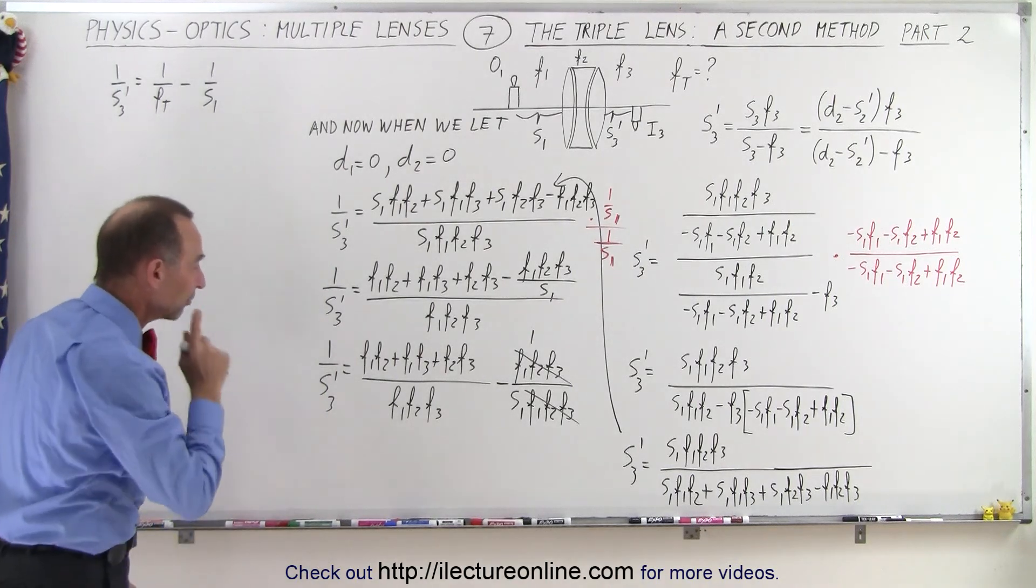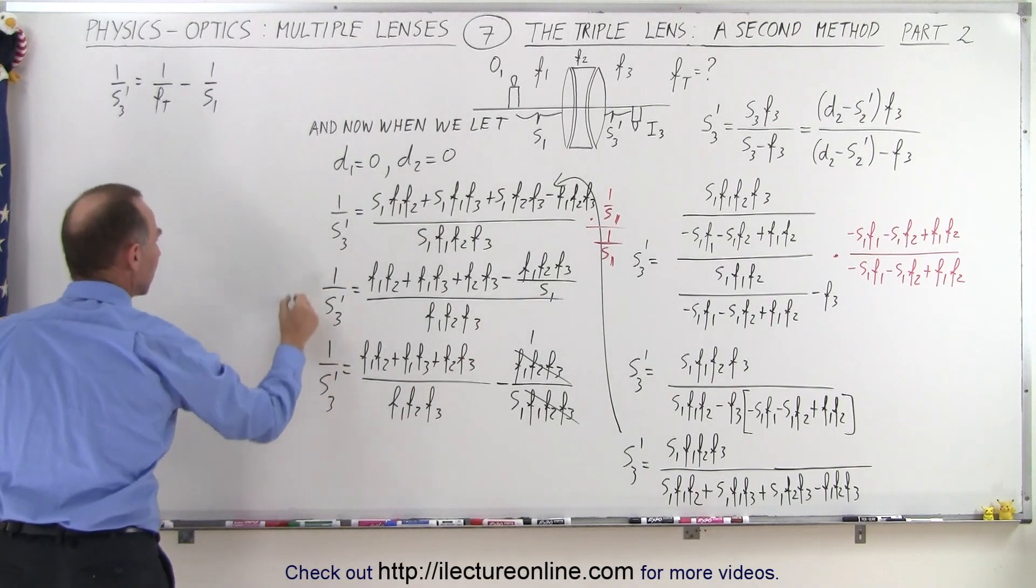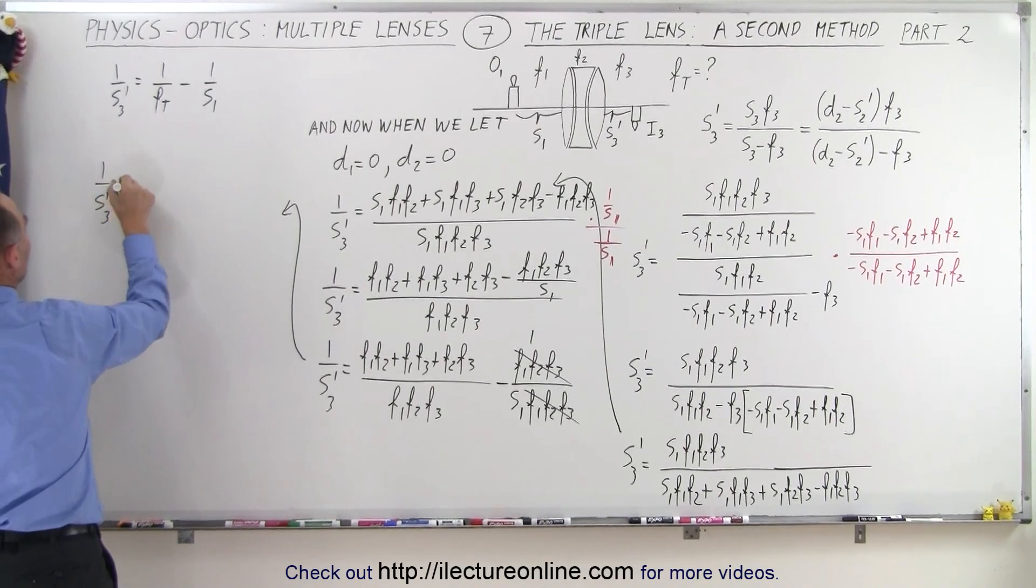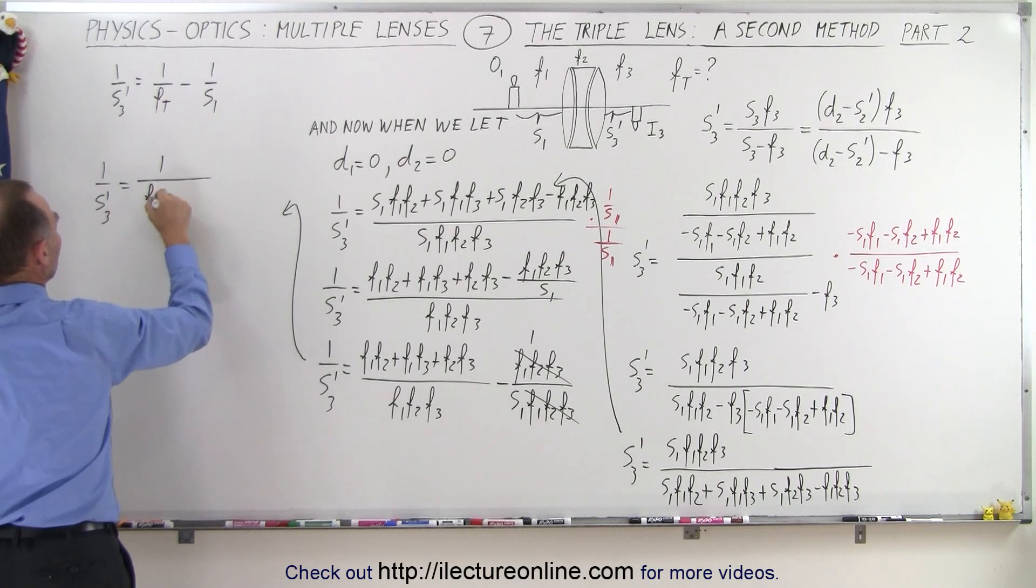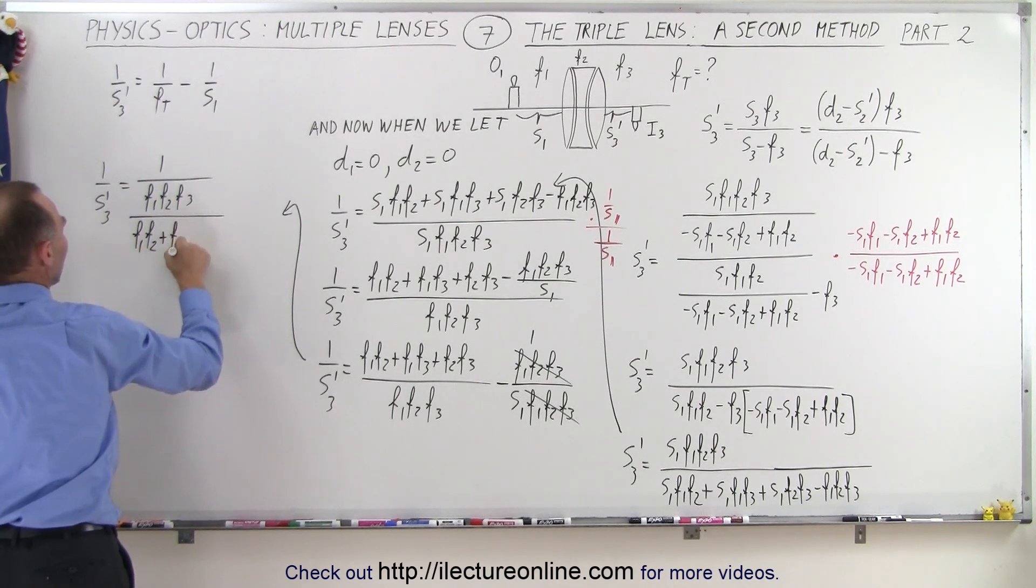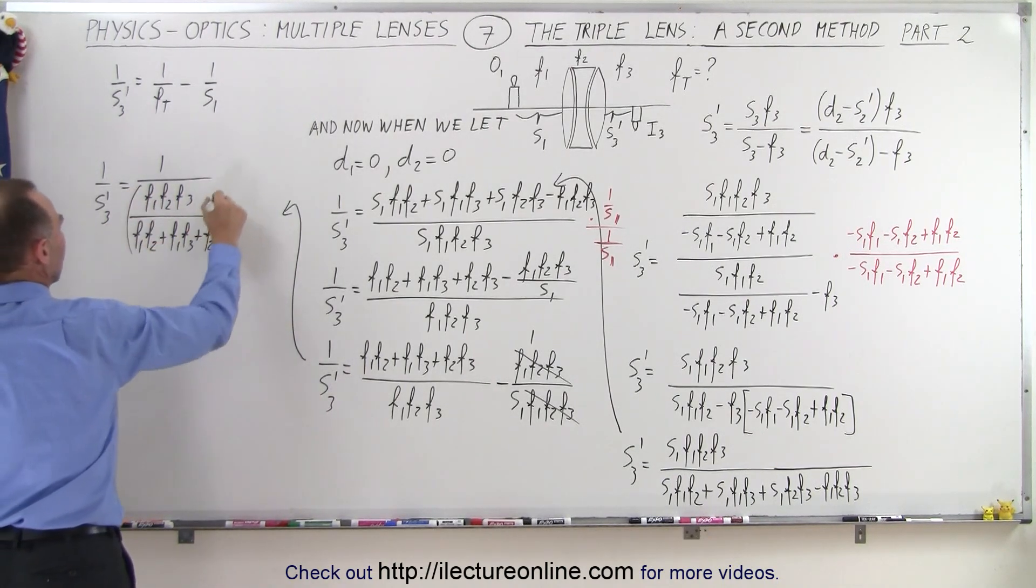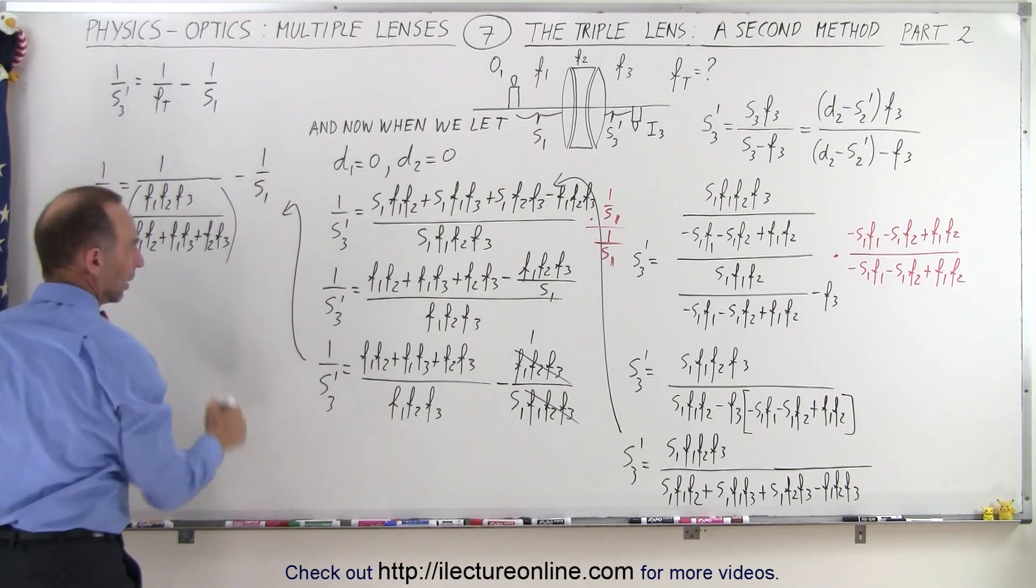So now I'm going to rewrite this with this in the denominator. From here we can now write that we have 1 over s3 prime is equal to 1 over f1 f2 f3 divided by f1 times f2 plus f1 times f3 plus f2 times f3. So this is in the denominator now, and then minus 1 over s1, which is what we have left over from there.